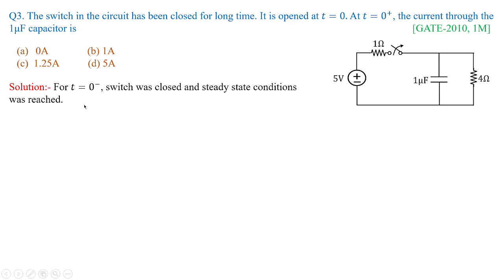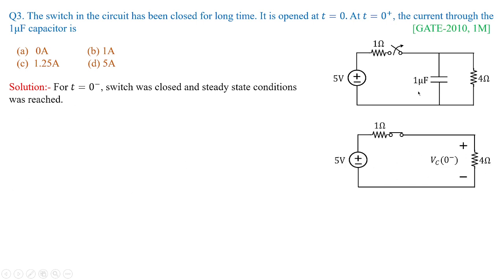For t equal to 0 minus, assuming the switch closed for long duration and steady state reached, the capacitor voltage Vc(0-) equals the voltage across 4 ohms. Using the voltage division rule, Vc(0-) equals 5 multiplied by 4 divided by 1 plus 4, giving 4 volts. When the switch opens, the 5 volt source disconnects and the 4 volt charged capacitor acts as a voltage source in series with the 4 ohm resistor.